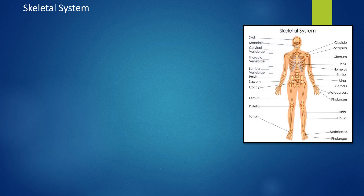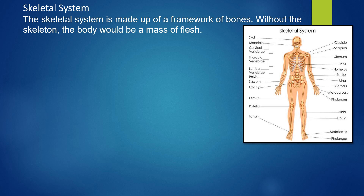First: the skeletal system. The picture shows different body parts — bones. Different bones together are called the skeletal system. We have the skull, mandible, cervical vertebrae, thoracic vertebrae, lumbar vertebrae, and more. The skeletal system is made up of a framework of bones. Without the skeleton, the body would be a mess of flesh.